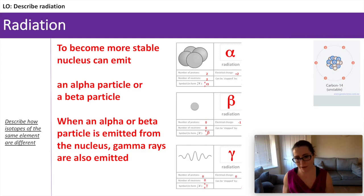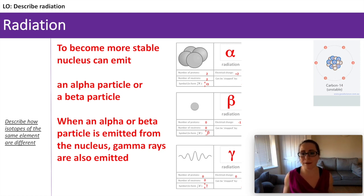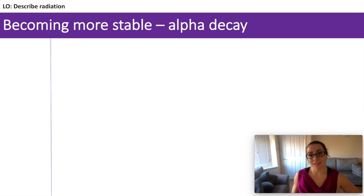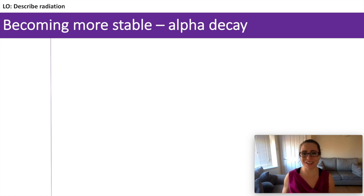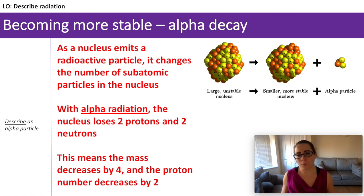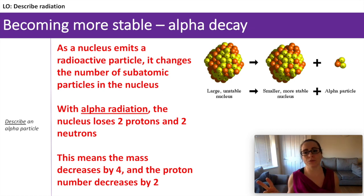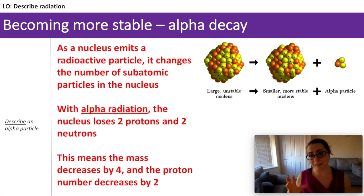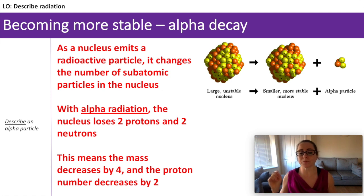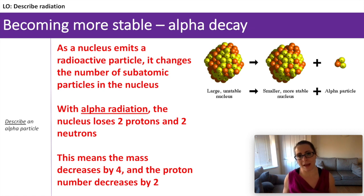Talking in more detail about radiation — unstable nuclei can emit either alpha or beta to become more stable, and when they emit an alpha or a beta particle, they will also emit gamma radiation or gamma rays. So, alpha decay. We talked about an alpha particle being a helium nucleus — it has a mass of four and a charge of two. What is happening is an unstable nucleus is losing two protons and two neutrons in that alpha particle, to make the nucleus more stable. But as the alpha particle is lost, it causes the mass number and the charge number of the nucleus of that atom to change.